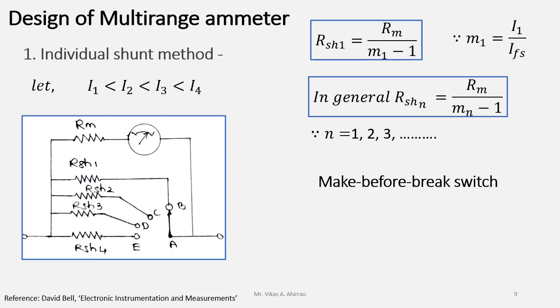Now as the name indicates make before break, it means that it will make the contact with the next one first and then it will break the contact with the previous one. As shown in the diagram, if the switch needs to be moved from position B to C, then it is having a wider contact area.